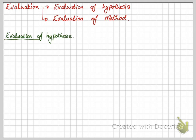So evaluation. There's two ways to evaluate your experiments. One is evaluation of hypothesis, and the other one is evaluation of method. So we're going to first of all start with evaluation of hypothesis. Does your data support your hypothesis?